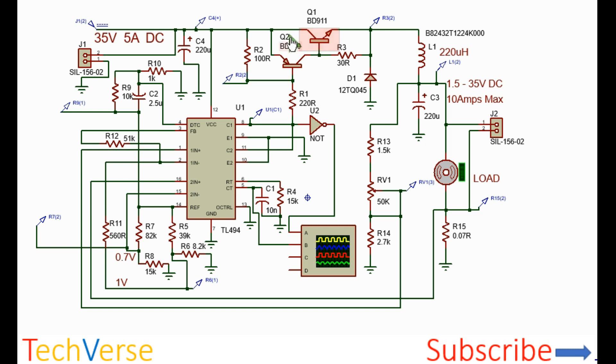This will conduct and allow current to flow from the input supply through the output inductor to the output capacitor. During the on time, the freewheeling diode D1 remains off.